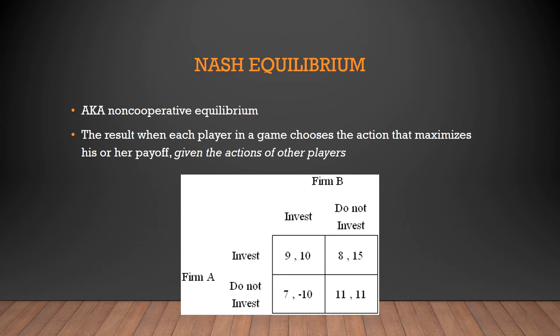Let's look at Firm A. We want to see if Firm A has a dominant strategy — that's where we're going to start. Always start with looking at the dominant strategy first; that's how you'll find your Nash Equilibrium if one exists. Does Firm A have a dominant strategy? If Firm B invests, Firm A can earn 9 if they invest or 7 if they don't invest — so far Firm A wants to invest. However, if Firm B doesn't invest, Firm A would earn 8 by investing and 11 by not investing. So depending on what B does, it changes what A should do. Firm A does not have a dominant strategy.